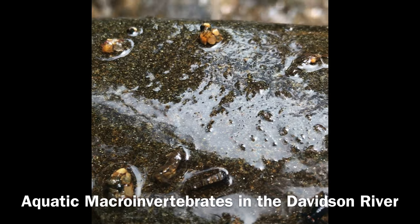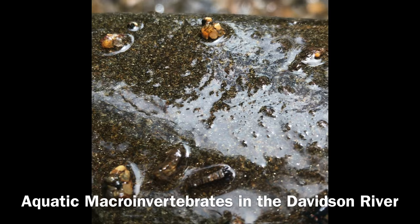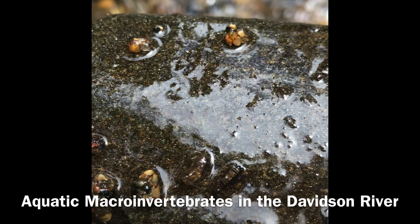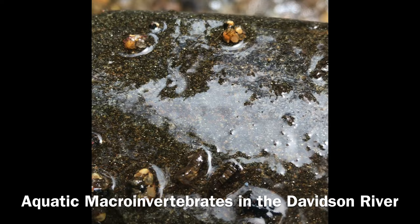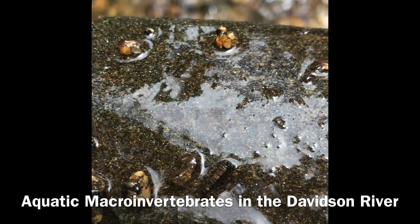Hey friends! I'm Ranger Rowan and today I'm going to talk about how to identify aquatic or benthic macroinvertebrates. These are insects and other critters without backbones that live on or underneath water and are visible to the naked eye. Scientists look for them in rivers, lakes, and other bodies of water to determine how clean the water is. Some macroinvertebrates can only live in really clean water while others can live in any quality water.